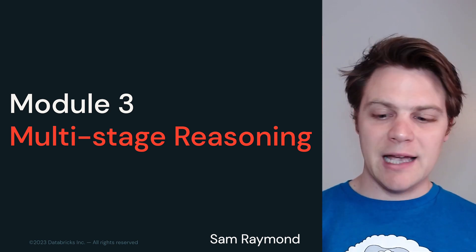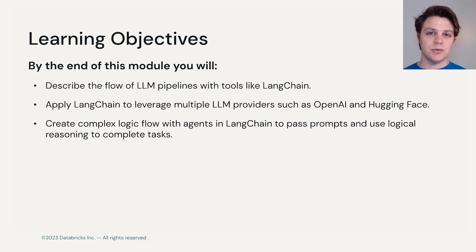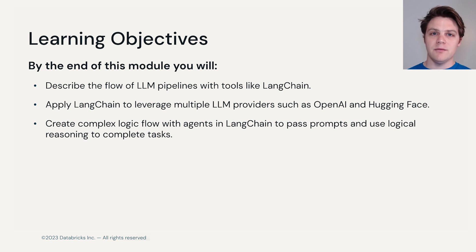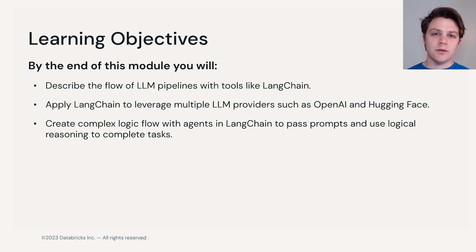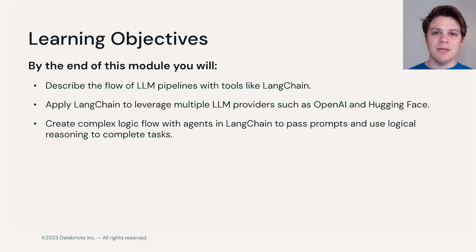In this module, we'll show you exactly how you can do that with the various tools that are available. By the end of the module, you'll be able to describe the flow of LLM pipelines with tools like LangChain. You'll use LangChain to build pipelines that involve LLMs from various providers, including OpenAI and Hugging Face. Then we'll build complex logical flow patterns using agents that leverage LLMs as the centralized brain and different tools they can use to solve given tasks — such as web searching or coding environments like a Python tool.